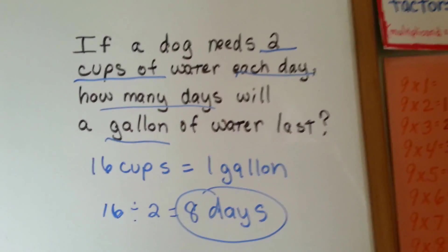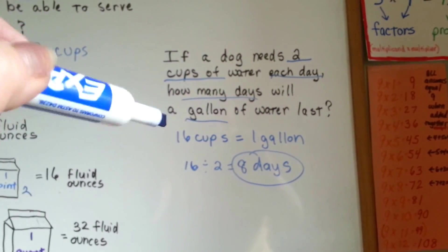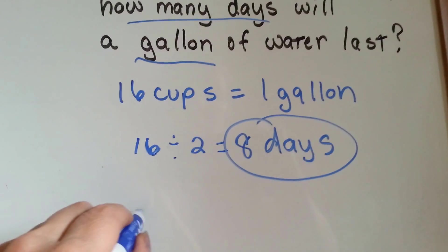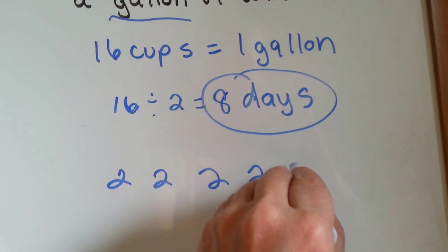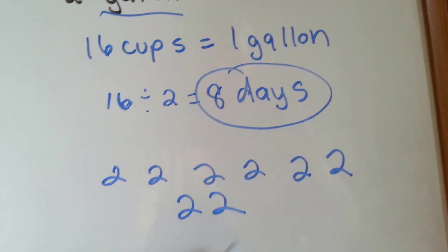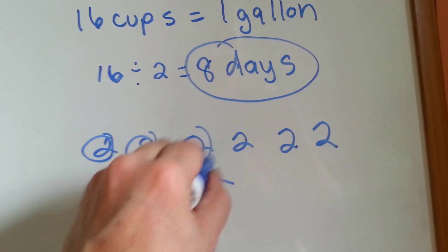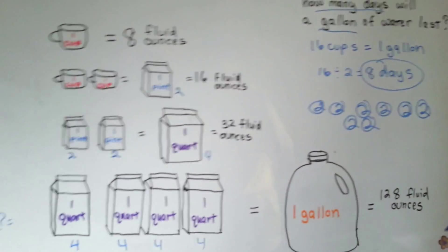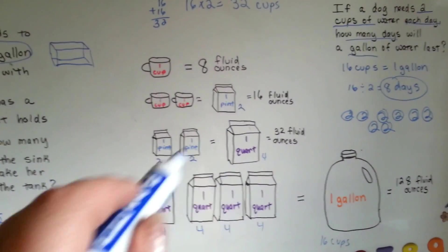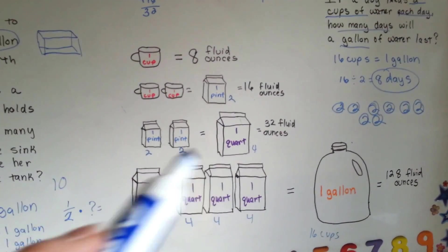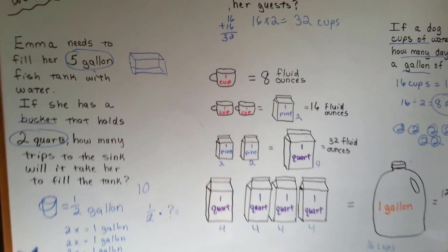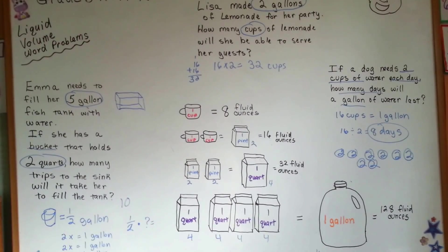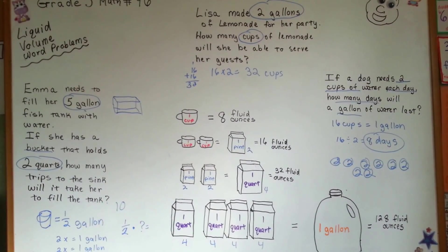We figured out how many cups are in a gallon, and figured he's going to drink two cups a day. It's important to know how each of these units relate to each other: how many cups are in a pint, how many pints are in a quart, how many quarts are in a gallon — and that'll help you answer the word problems. Most school math books have a chart in the back that tells you cups, pints, quarts, and gallons. See you next video — we're going to talk about mass.